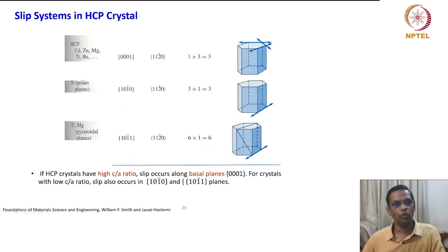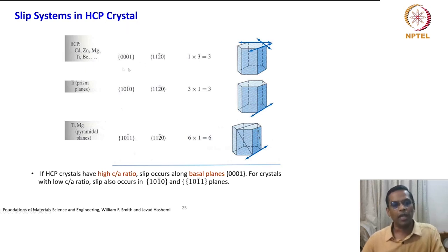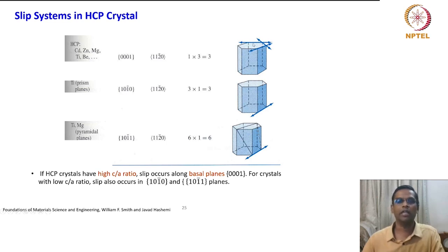Similarly, looking at slip systems in the hexagonal close-packed crystal, the primary slip systems are the basal plane. You can see 3 directions: the {0001} basal plane and ⟨11 2̄ 0⟩ direction — 1 plane times 3 directions gives 3 slip systems.